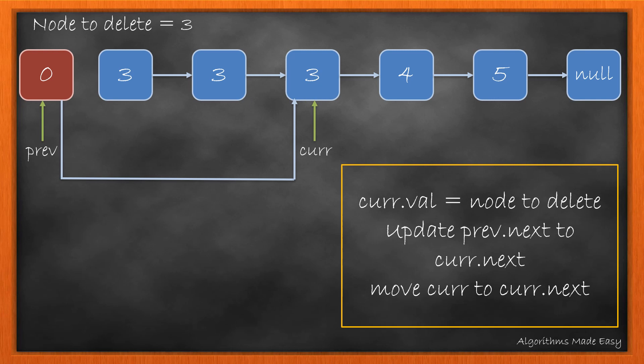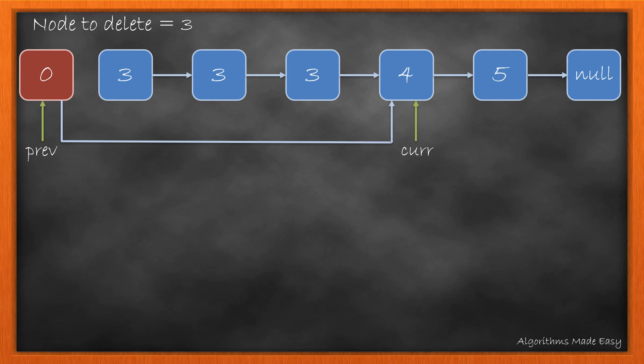So, we update the pointer of previous node and move our current pointer. As this is also the node that needs to be deleted, once more we do the same.